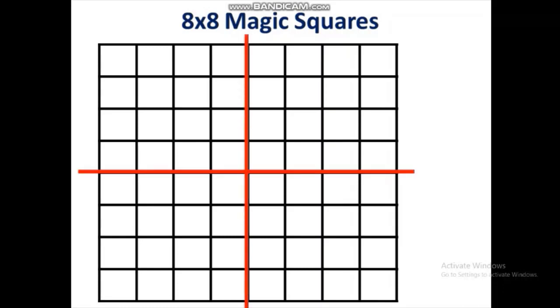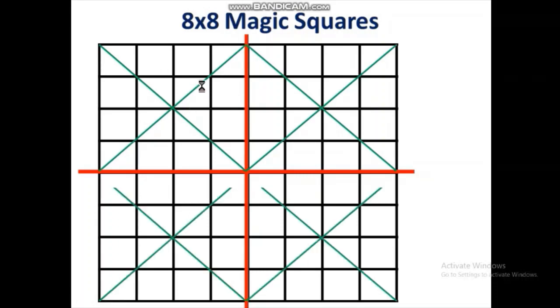Before filling, we have to divide the 8 by 8 magic square into four equal parts in this way. Each part consists of one 4 by 4 square, and again each 4 by 4 square is also divided into two equal parts, four equal parts in this way.